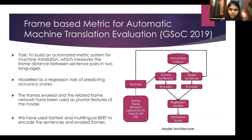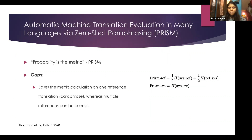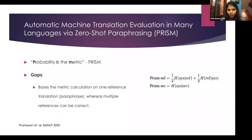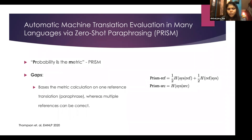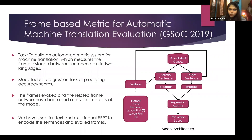That gap — relying on only one reference — is something we can bridge with frame semantics. It is not humanly possible to have all possible reference sentences to calculate the metric, but using frame networks, which capture all kinds of semantic relations for each word, we can get over that bottleneck.